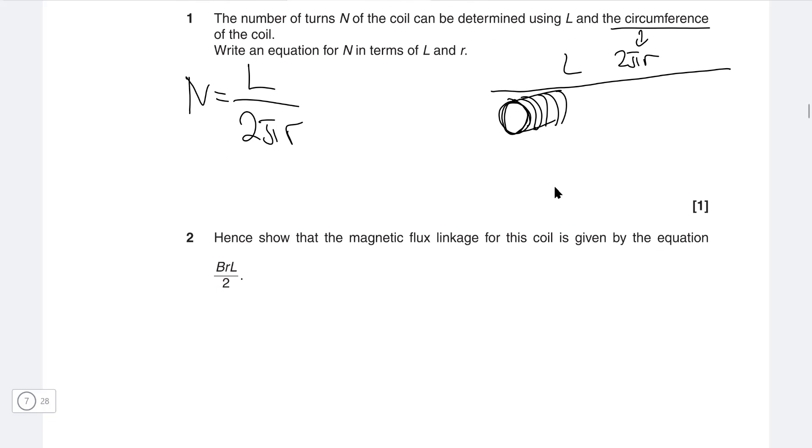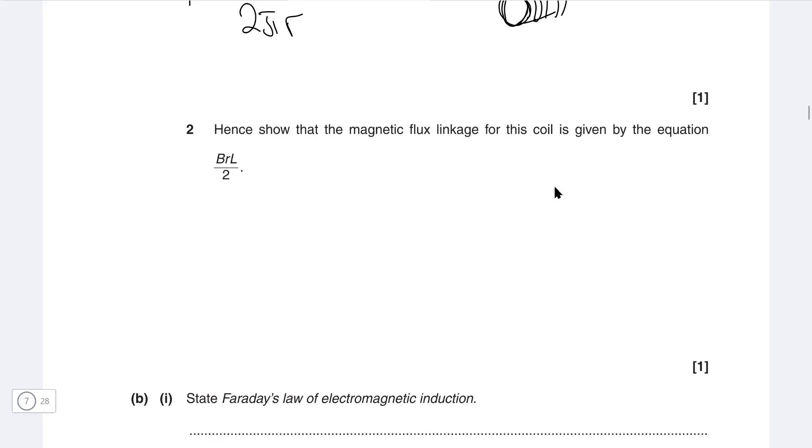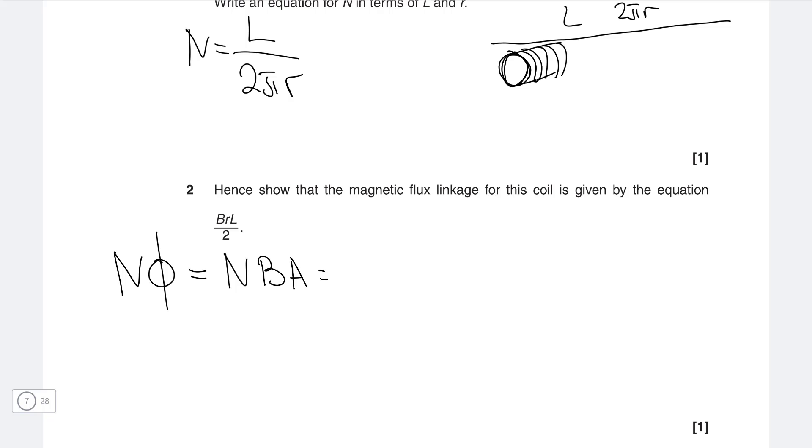We can show that the magnetic flux linkage for this coil is given by the following expression by using the fact that magnetic flux multiplied by the number of turns equals n. Phi is b a. In the previous part we've shown that n is L over 2 pi r, multiplied by b. And we also have the area which is pi r squared. After cancellation, we get L B R over 2, which is what they want us to prove.